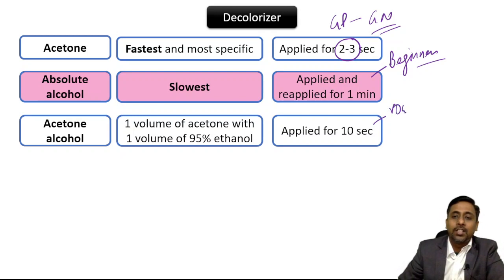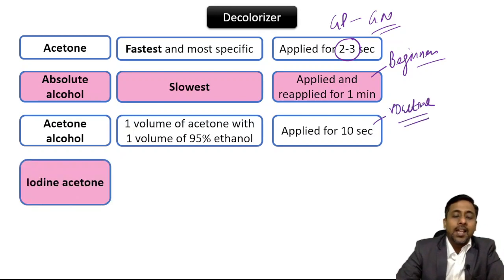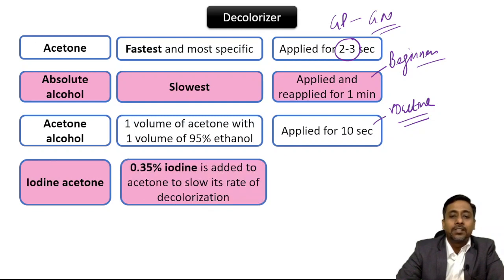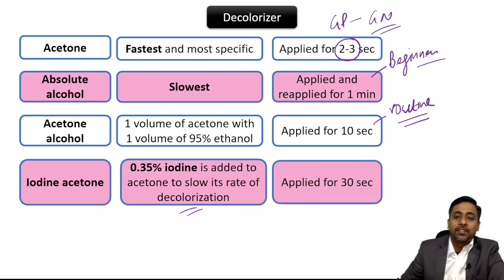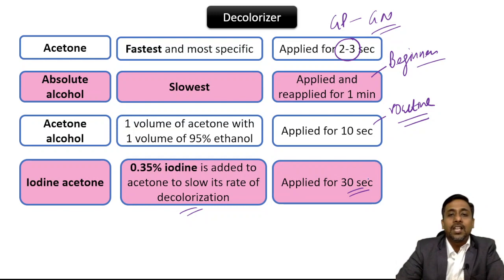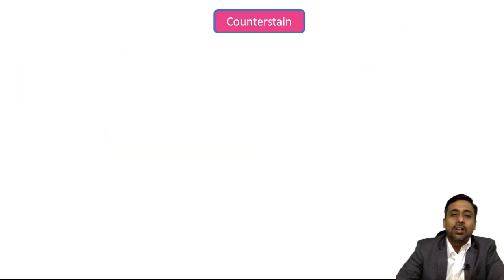Another method to slow the rate of decolorization by acetone is by adding iodine to it. When 0.35% iodine is added to acetone, it slows the rate of decolorization, and iodine-acetone can then be applied for 30 seconds. These are the decolorizers which can be used in gram staining.